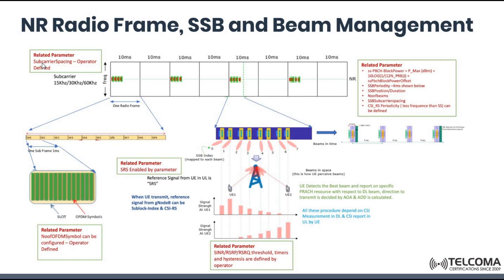On another dimension, we can see the subcarrier spacing, which depends on configuration via the subcarrier spacing parameter. This can be defined by the operator as per the frequency band — whether it's sub-3 GHz, up to 6 GHz, or above 6 GHz. Taking an example of 8 beams, these 8 beams are represented by SSB index 0 to 7.